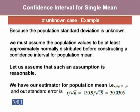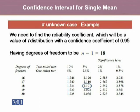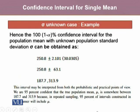The standard error of the mean is 30.0305. We need to find the reliability coefficient, which is a value from the t distribution with a confidence coefficient of 0.95 and degrees of freedom n minus 1 equals 18, which turns out to be 2.101 at 5% alpha and 18 degrees of freedom. Hence, the 95% confidence interval for the population mean is 250.8 plus or minus 2.101 times 30.0305.